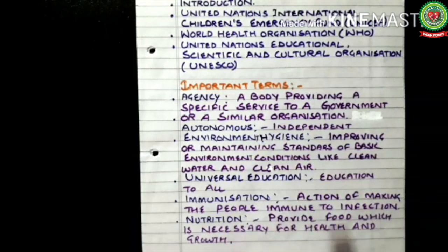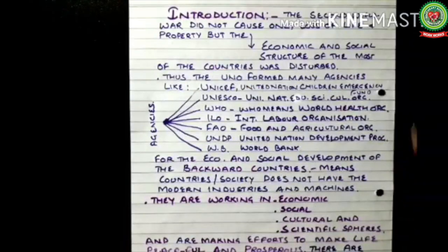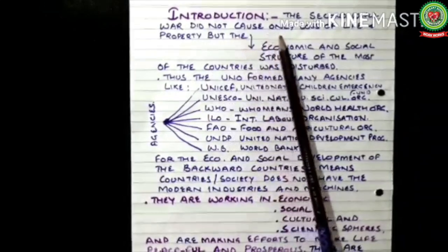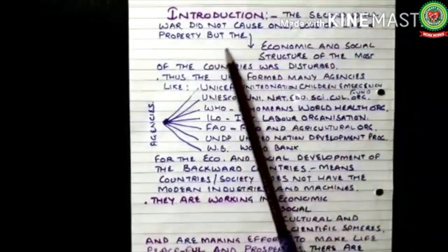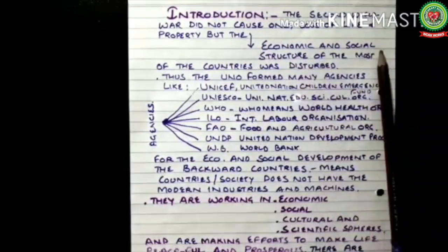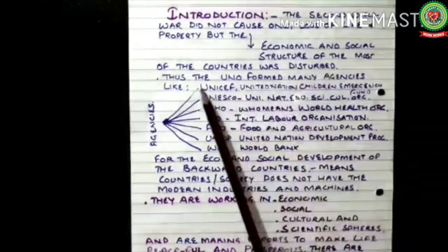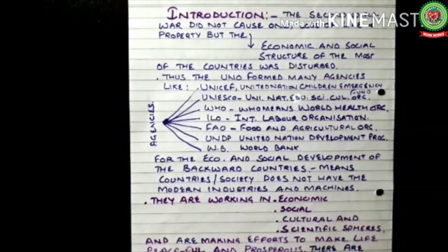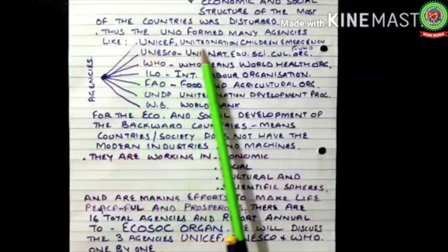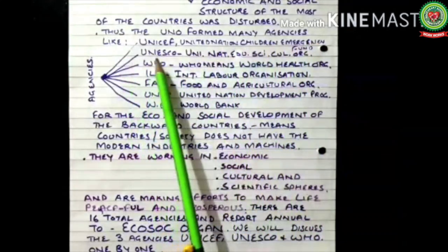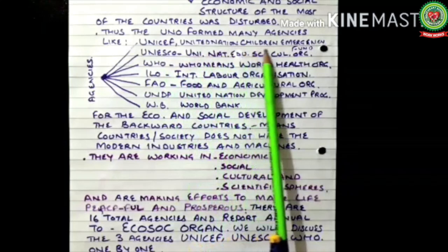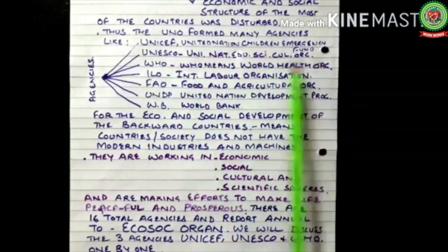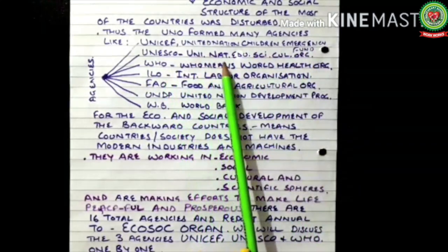Key terms include: environment hygiene — improving or maintaining standards of basic environmental conditions like clean water and clean air; universal education — education for all; humanization — action of making people immune to infection; nutrition — providing food which is necessary for health and growth. Introduction: The Second World War did not cause only loss of life and property, but the economic and social structure of most countries was disturbed.